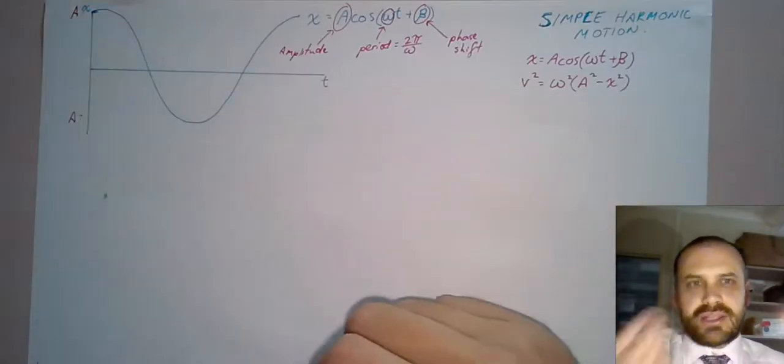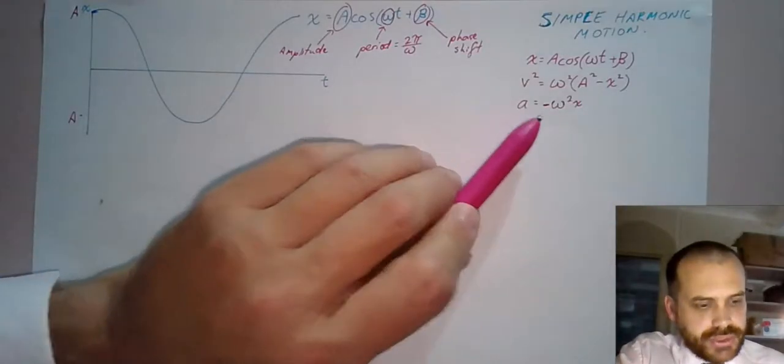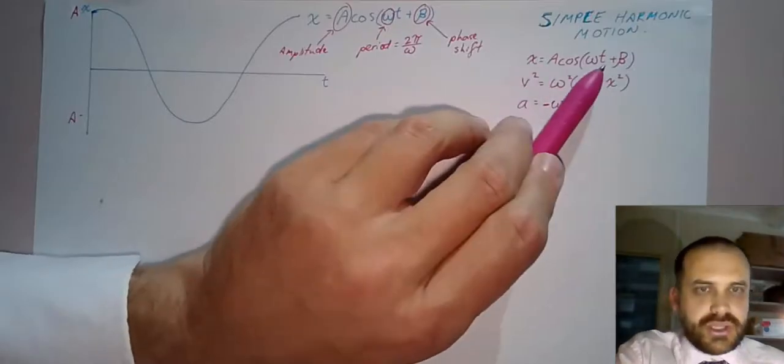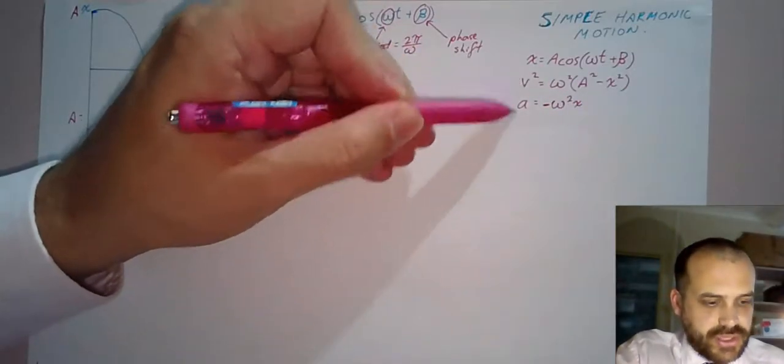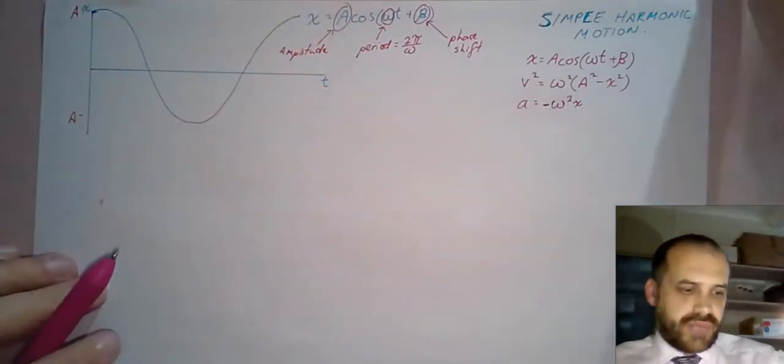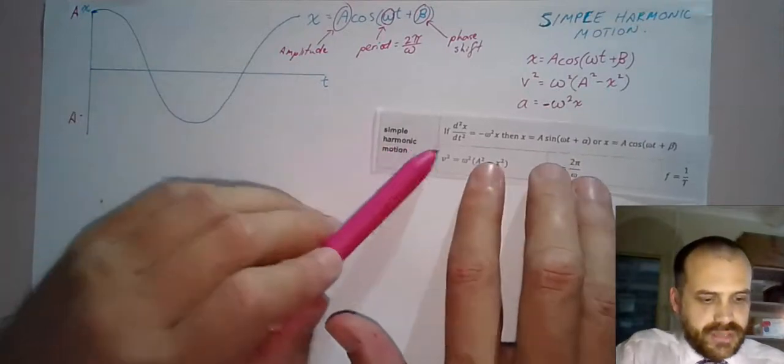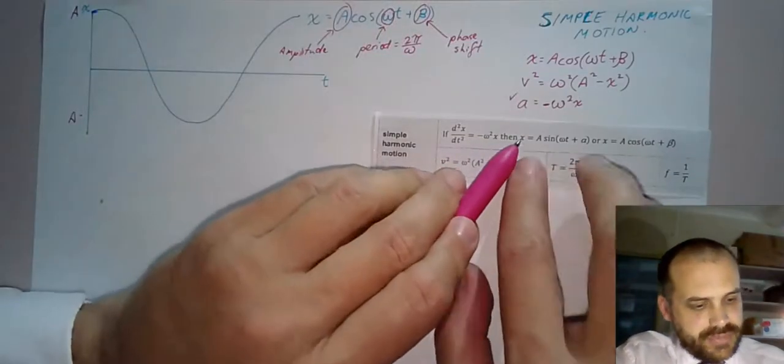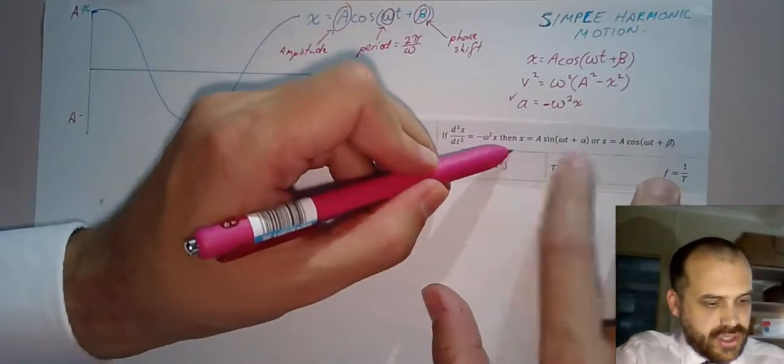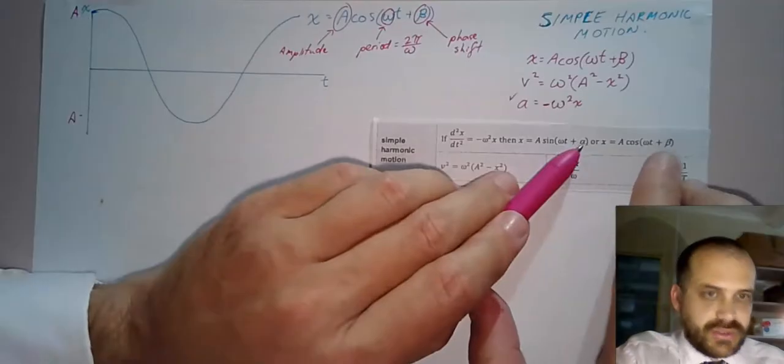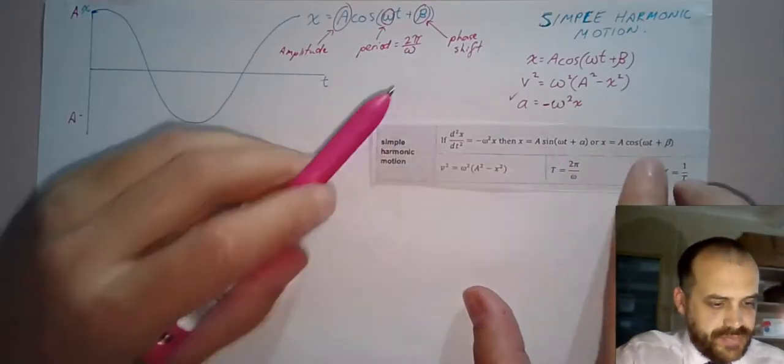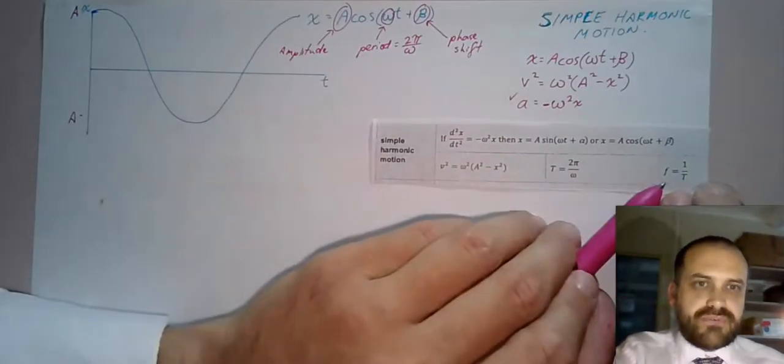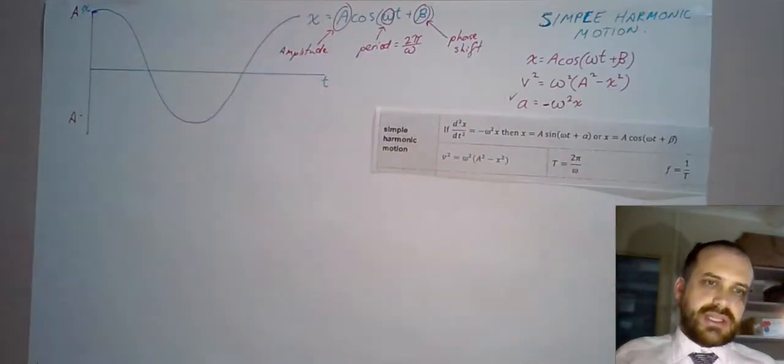What about an acceleration function? Acceleration equals negative ω²x. In all of these, x is displacement. Now all of this is available on your formula sheet. You can see the second derivative, the acceleration function, equals negative ω². They give two versions of the displacement function, a sine one and a cos one. A velocity squared function, a period, and then the frequency.